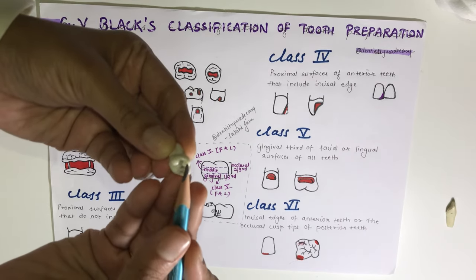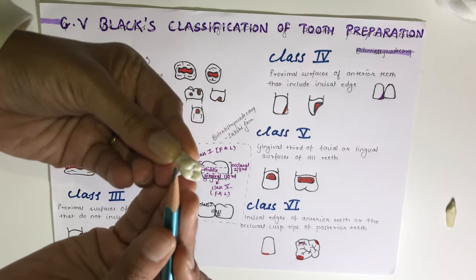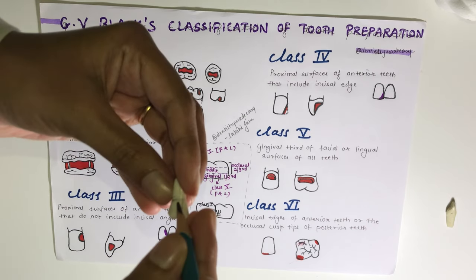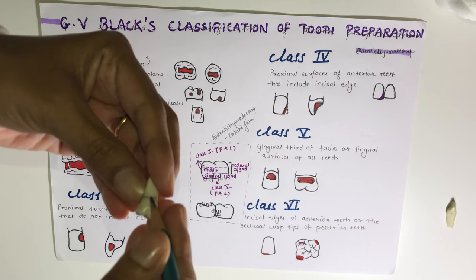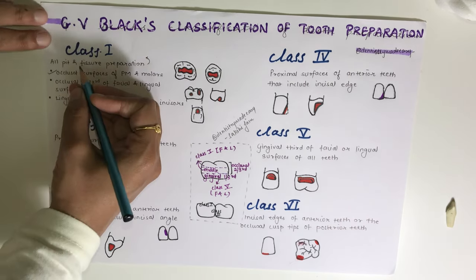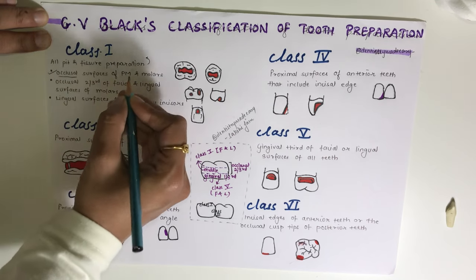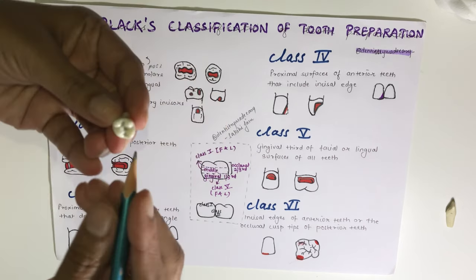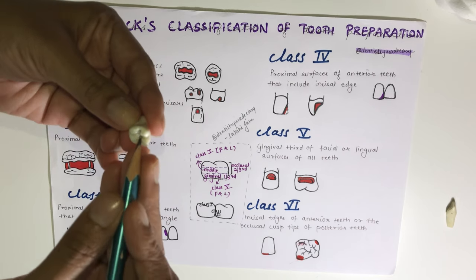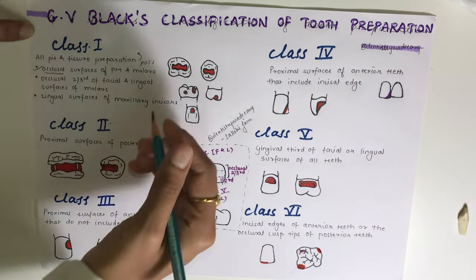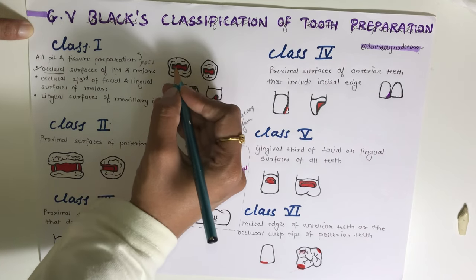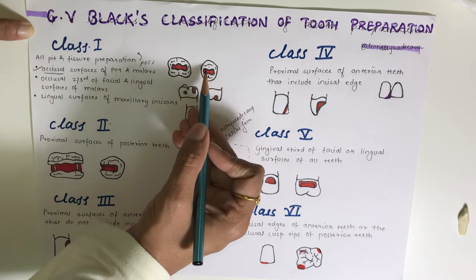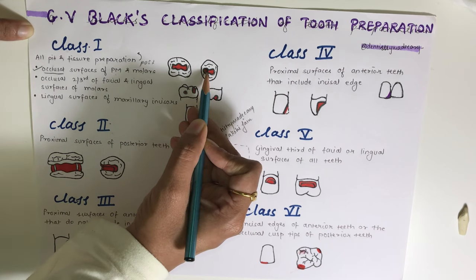The first location in Class 1 is the occlusal surface of the premolars and molars. A tooth has six surfaces: occlusal, lingual, buccal, mesial, distal, and gingival. The preparation done on the occlusal surface of posterior teeth comes under Class 1 - for example, the molar occlusal preparation and the premolar occlusal surface preparation.